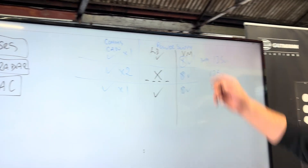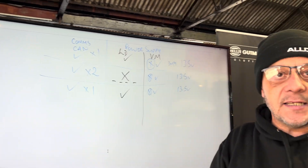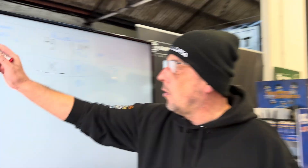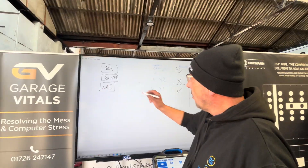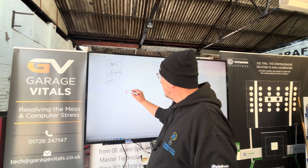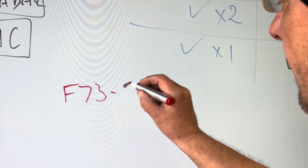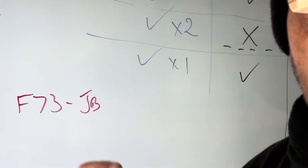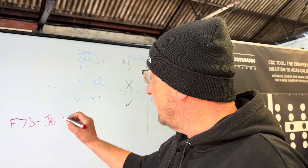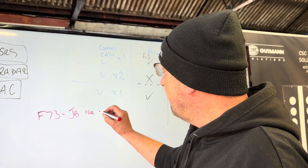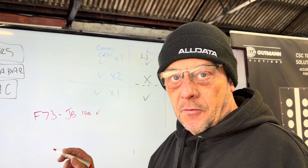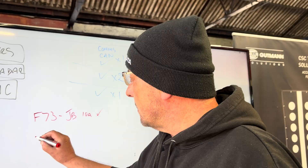That's our testing procedure and process. Now, what is common to all three modules? All three modules are powered by fuse F73 in the junction box - the little fuse box underneath the steering wheel at the end by the A-pillar. F73 is a 10-amp fuse. That fuse is good.